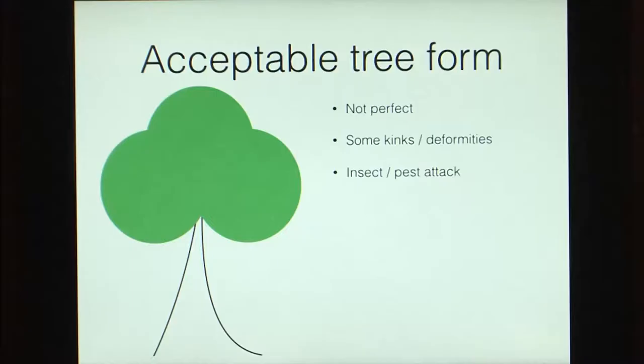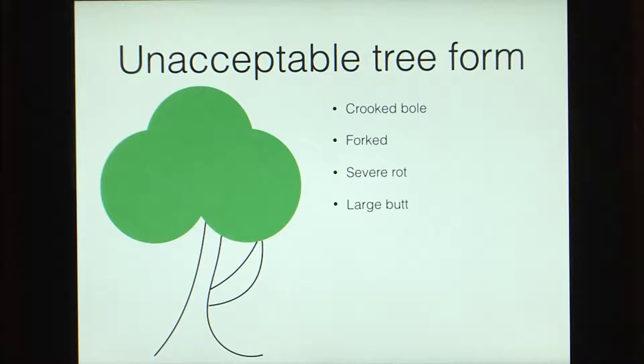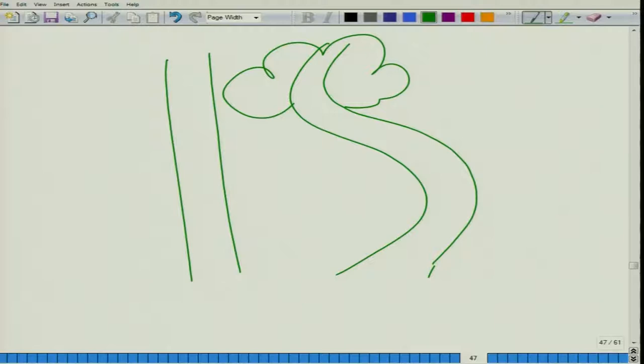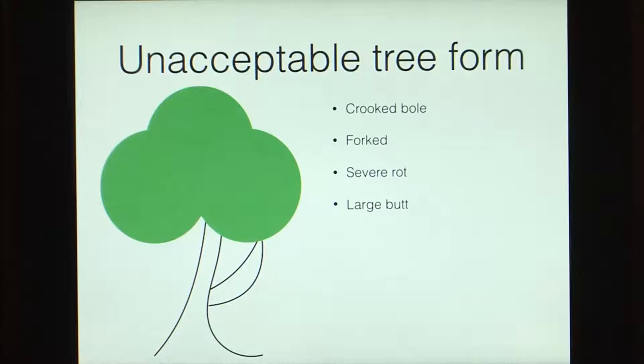Next, we have an acceptable tree form. An acceptable tree form is not perfect — it has some kinks or deformities, it might even be having some insect or pest attack, but it is acceptable and we can use it for some purposes. But then we have unacceptable tree forms. An unacceptable tree form could mean a tree that is highly crooked — moving in a serpentine manner — or it might be having a huge amount of forking, or a severe rot, or a large butt. That would be considered an unacceptable tree form.